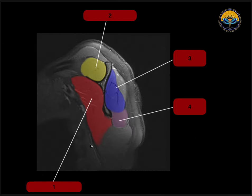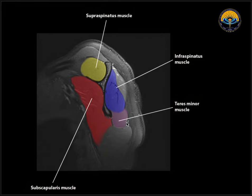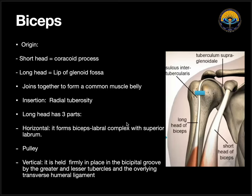Now coming to the sagittal sections. Here we can see the scapula and the spine. Anterior to the scapula, we will see subscapularis. Above the spine, we will see supraspinatus. Below the spine, we will see infraspinatus and teres minor. Now we have seen the coronal, axial, and sagittal sections. Now we will talk about the biceps.